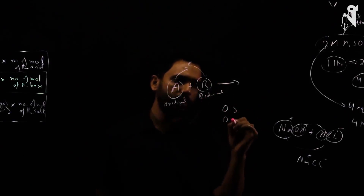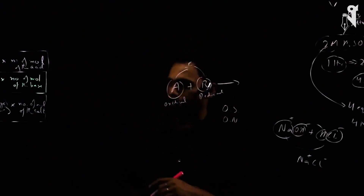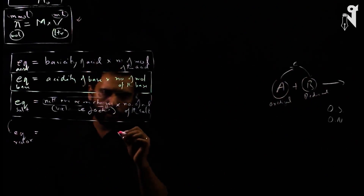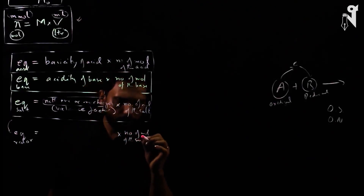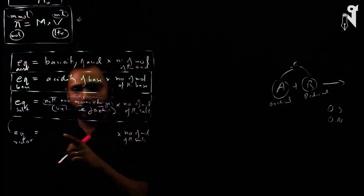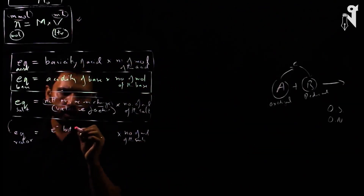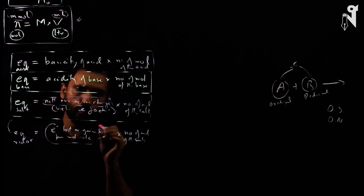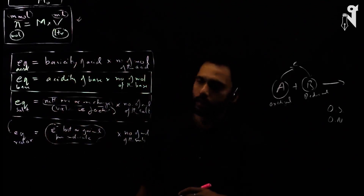If the valency is not changing, it's not a redox reaction — in a redox reaction, the oxidation state changes. We'll cover oxidation state and oxidation number in the redox chapter. The definition of equivalence for a molecule undergoing redox is: equivalence = X factor × number of moles. The X factor is the number of electrons lost or gained per molecule.